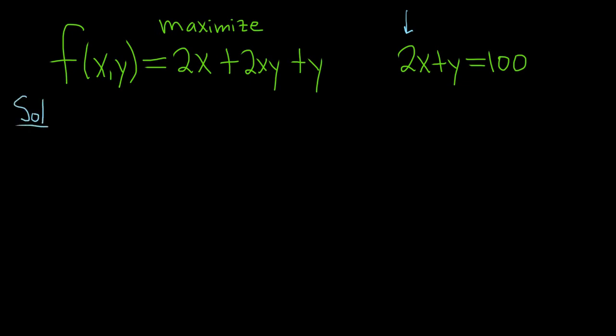So the method of Lagrange multipliers says that you have to solve the following equations. We have the gradient of f of xy, that's equal to lambda times the gradient of g of xy. This is basically saying that these gradient vectors are parallel, and the second condition is that you have some constraint g of xy equal to c. So here this is your g, and this is your c.